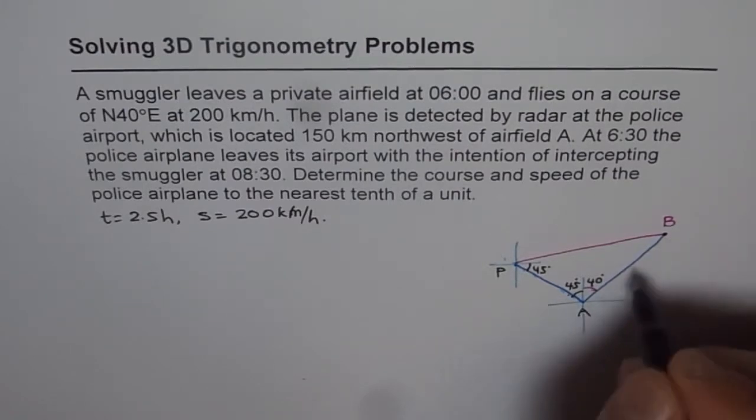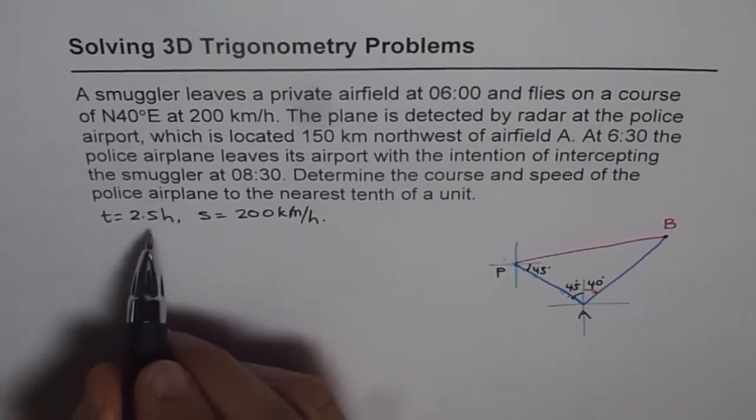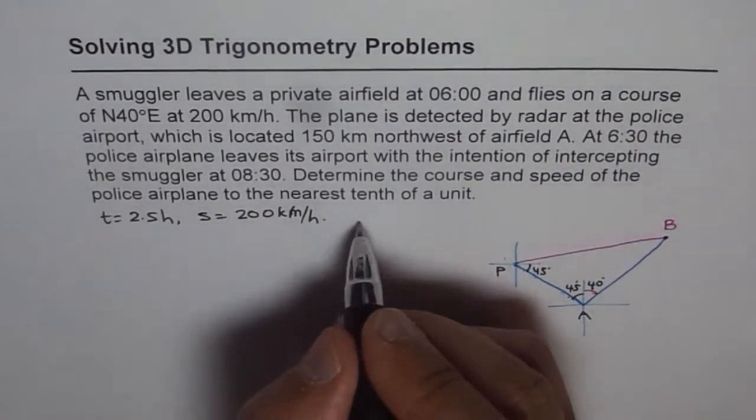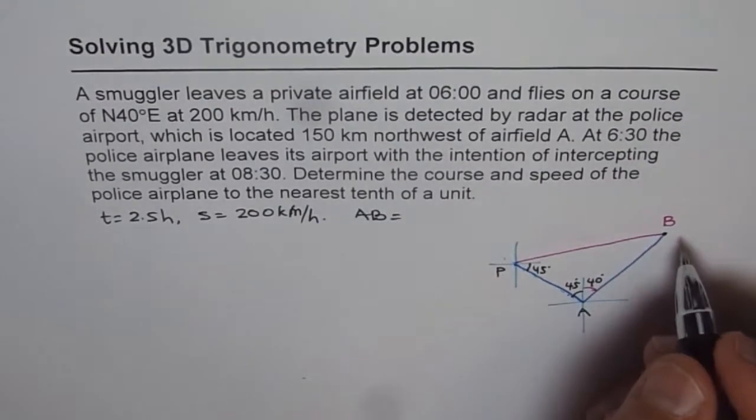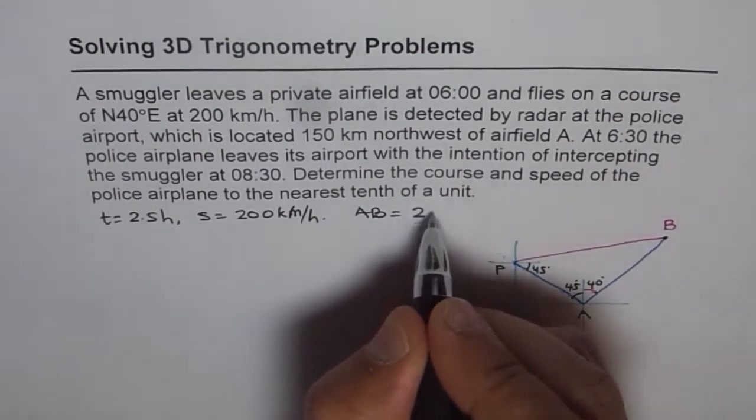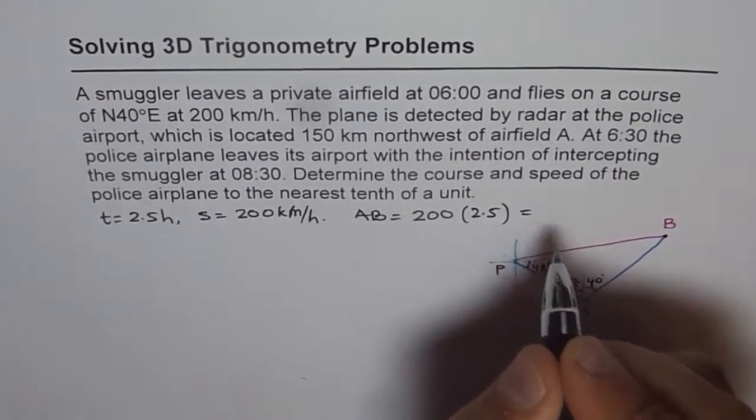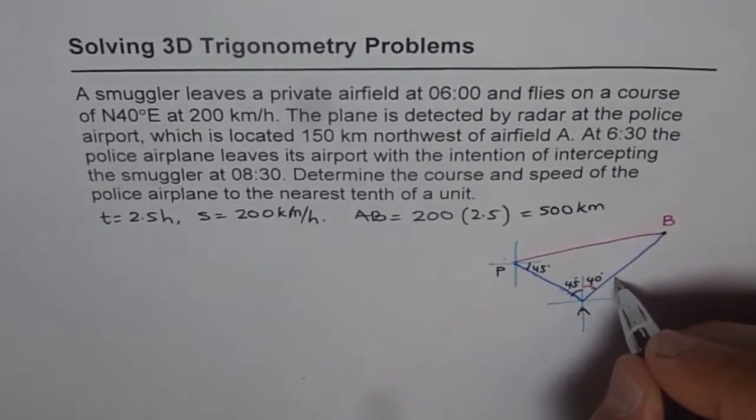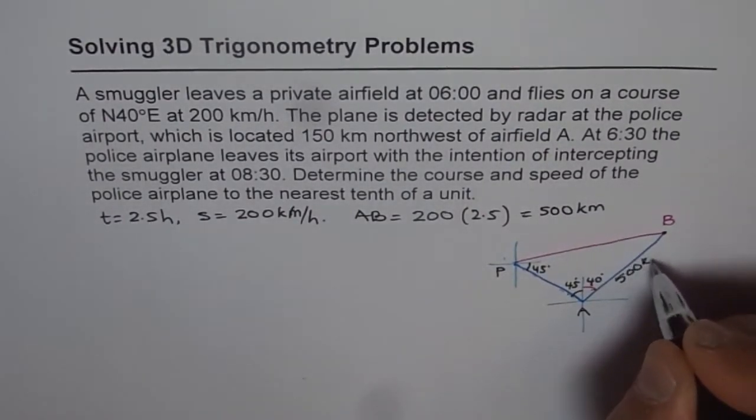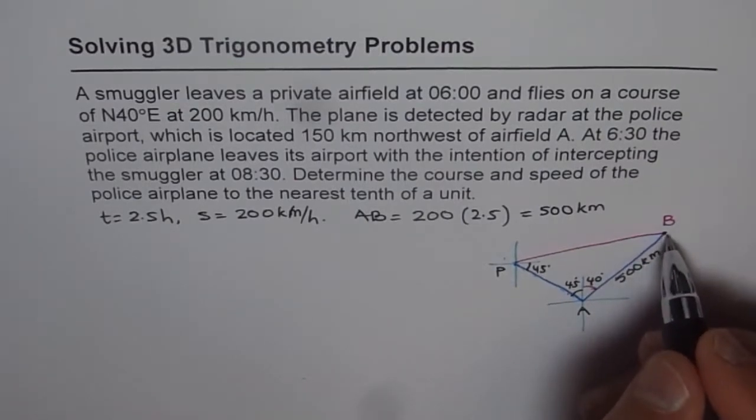At 6:30 the police airport leaves its airport with the intention of intercepting the smugglers at 8:30. So this smugglers plane left at 6, and they intend to catch up at 8:30. That means smugglers have flown during this time for two and a half hours from 6 to 8:30. So the distance where they should catch up will be approximately equal to time, which is 2.5 hours, and the speed for smugglers is 200 kilometers per hour.